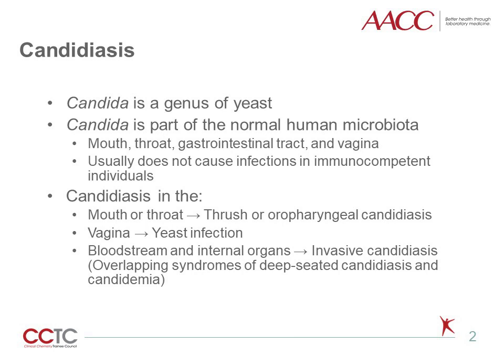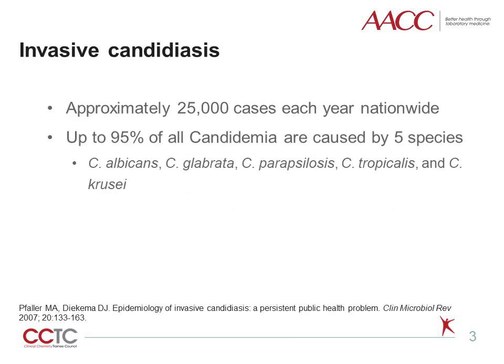When the infection is in the mouth or throat, it is called thrush or oropharyngeal candidiasis. In the vagina, a yeast infection; and in the bloodstream and internal organs, it is called invasive candidiasis, which includes overlapping syndromes of deep-seated candidiasis and candidemia. According to the CDC, the incidence is approximately 25,000 cases per year nationwide.